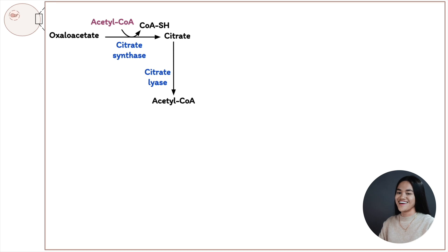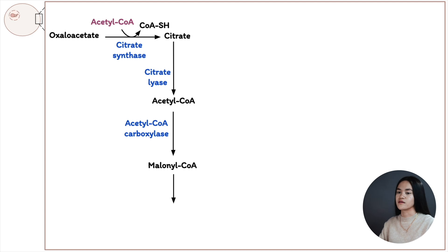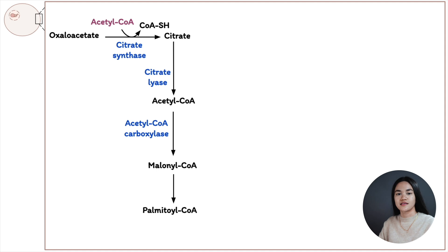Acetyl-CoA is then used to generate malonyl-CoA, an intermediate of fatty acid synthesis, catalyzed by acetyl-CoA carboxylase. The acetyl-CoA provides the first acyl group, and the malonyl group from malonyl-CoA provides subsequent acyls. The four-step process extends the chain by two carbon atoms per cycle after the first cycle, ultimately producing palmitate.